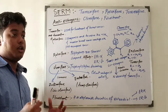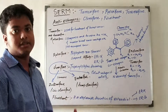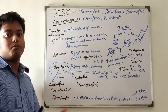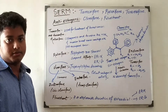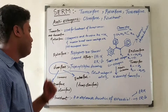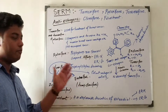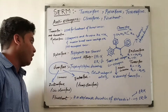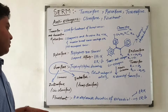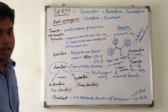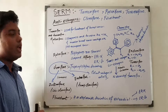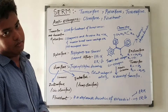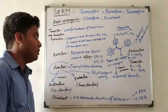Estrogen receptors are classified into two forms — alpha and beta — according to splicing mechanisms and different post-translational modifications of the transcription products. These receptor variants have affinity for both estrogen receptor alpha and estrogen receptor beta. Another compound is fulvestrant, which is a 7-alpha alkylamide derivative of estradiol, with equally potent affinity towards estrogen receptor alpha and estrogen receptor beta.